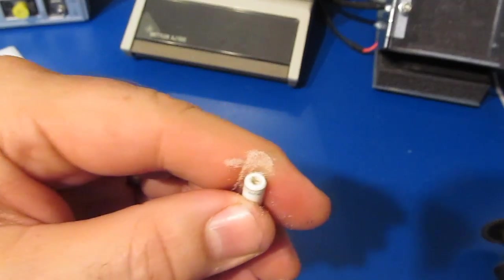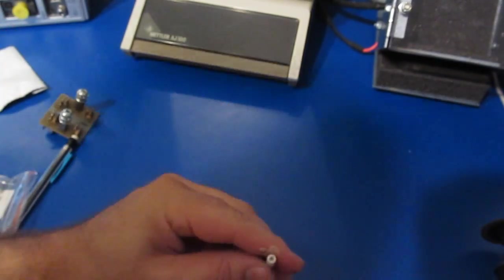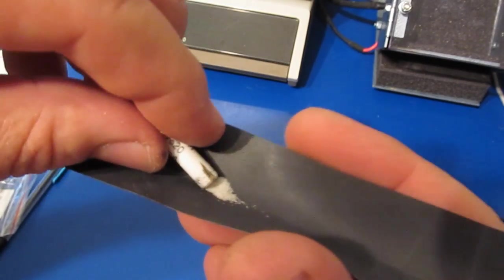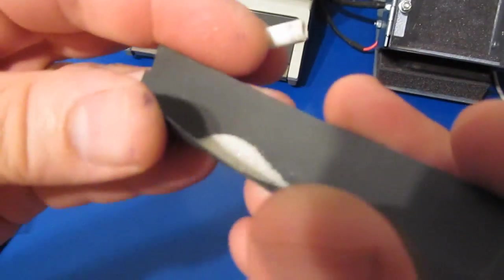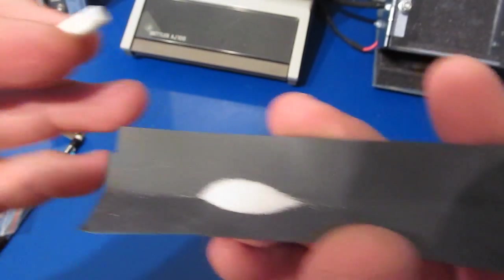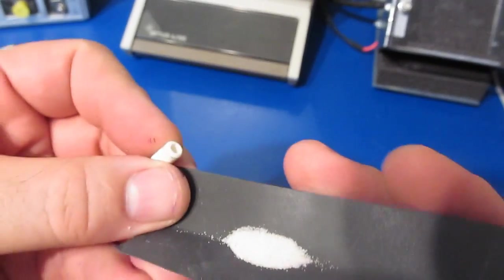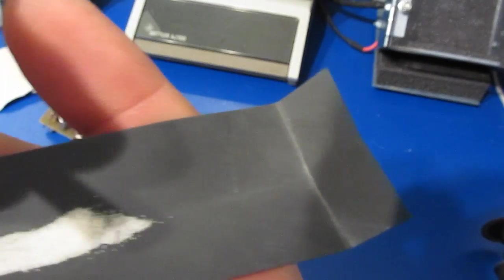It is basically filled right to the brim, fairly fine consistency. That could be a piece of the filament right there.